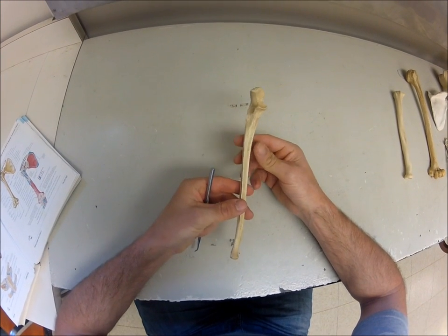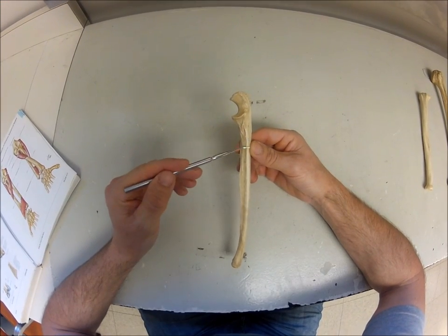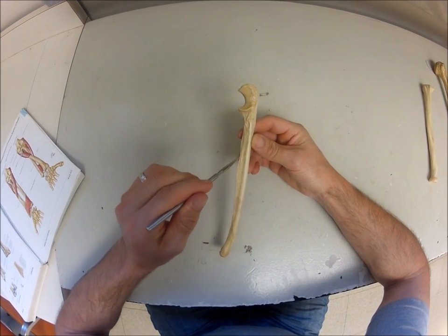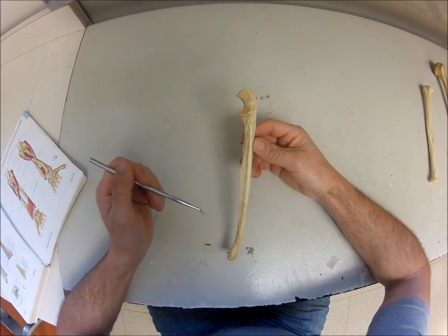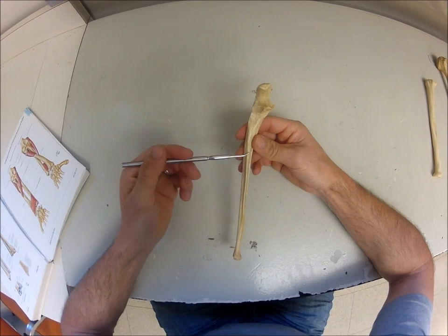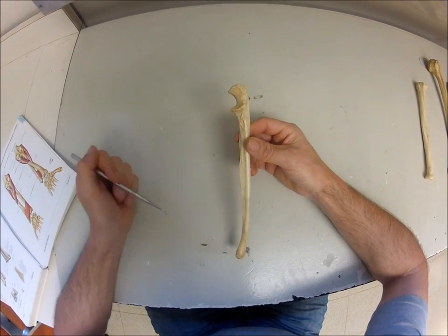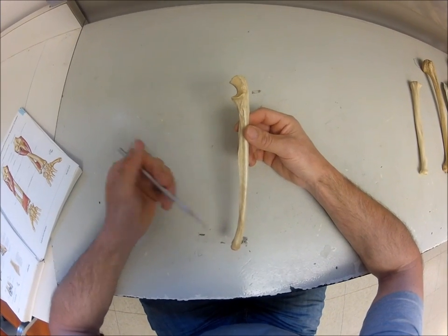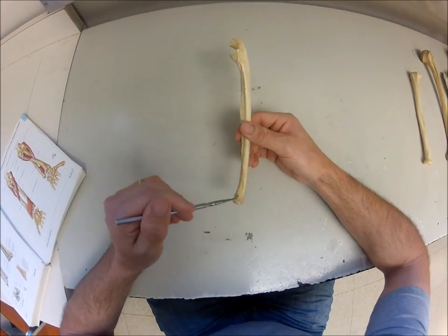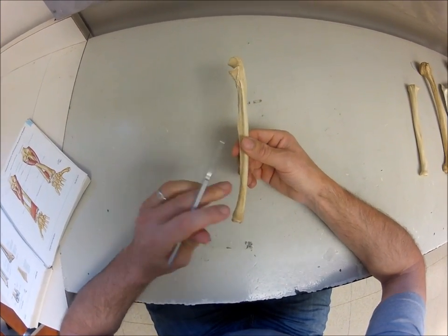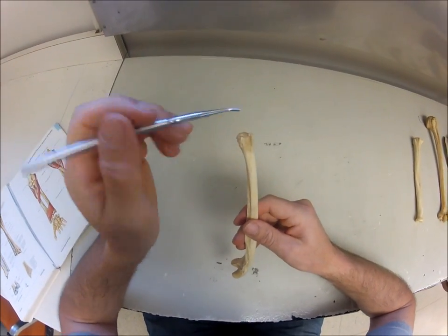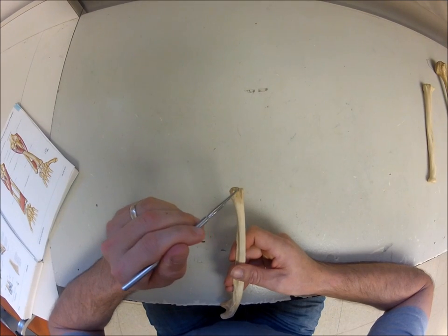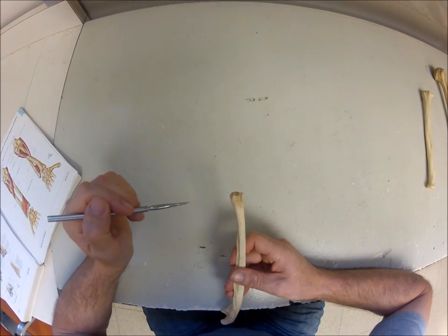Moving down the ulna, we have the anterior border and on this side is the interosseous border, which is relatively sharp — the interosseous membrane will attach there and connect over to the radius. Moving down to the distal end of the ulna, this is where we have the head of the ulna, and sticking off the head is the styloid process of the ulna, which is slightly broken off here.